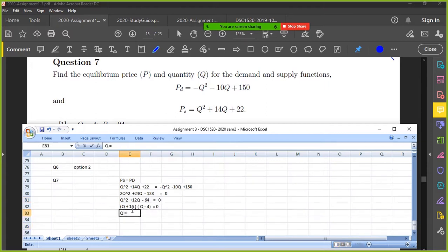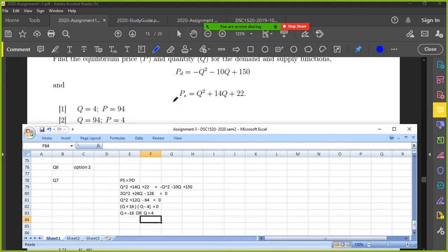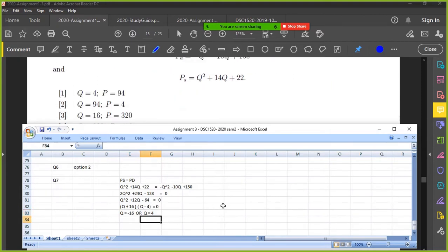Okay, so Q equals minus 16 or Q equals 4. You can't have negative quantities. So, that's out. Q has to be 4. So Q equals 4.